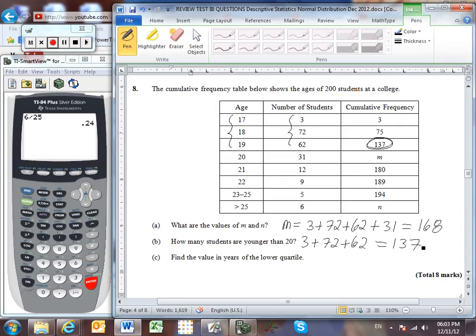And then find the value in years of the lower quartile. Now the lower quartile, if we've got 200 students, the lower quarter of them means that we're dealing with the lower 50 of the students. So where did we reach our 50th student? Well so far we've only got to 3 students. But when we included our 18 year olds, we now reached a total of 75 students. Meaning that somewhere in this 18 year old category, we passed the 50th student. And so our 50th student, our lowest quartile, must be 18 years old.